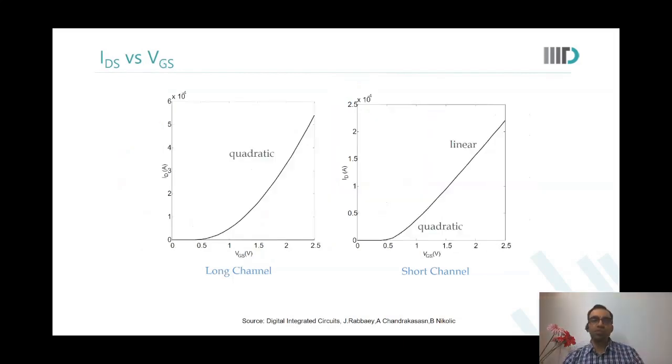Similarly, in short channel and long channel devices, the way it would reflect in ID-VGS curve is that you will see that a long channel device, this is quadratic behavior through and through. Whereas in short channel devices, it's quadratic behavior earlier, but then it turns to be linear. When you have short channel devices, your models also become more complex.